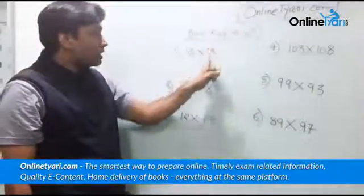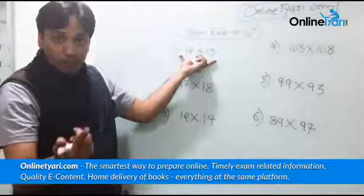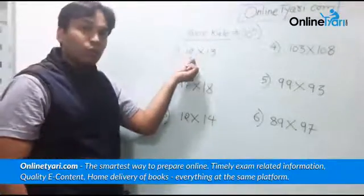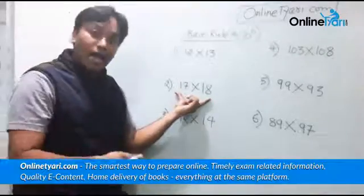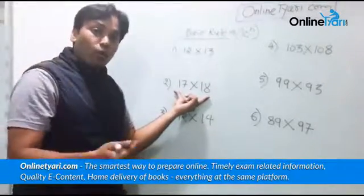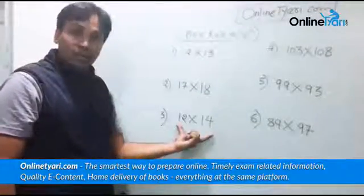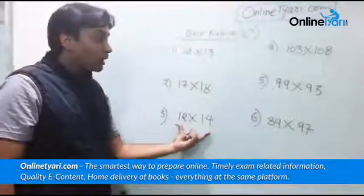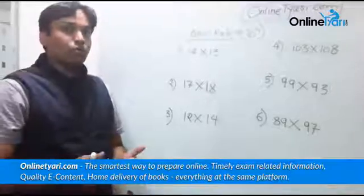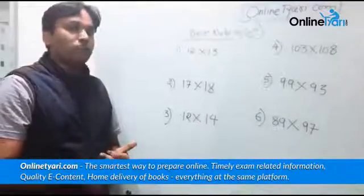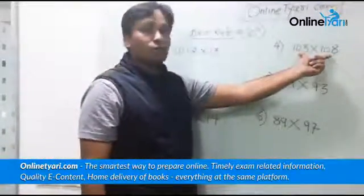And for this, n is 1. So these two numbers are closer to each other, number one. Number two, they are closer to 10 to the power 1. How about this? Closer to each other and closer to 10 to the power 1. How about this one? Now are they closer? Yes. Are they closer to 10 to the power 2? Yes, because these two numbers are closer to 100.